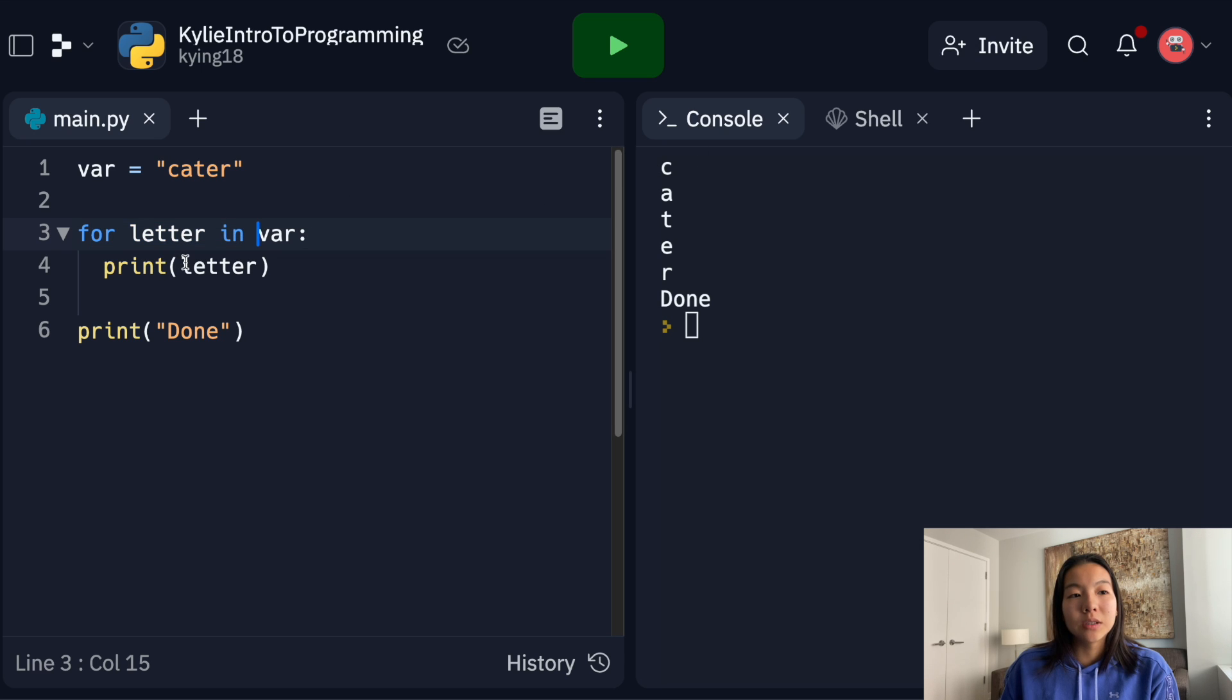So basically, what we're doing is going through C, printing that letter, going to A, printing that letter, T, printing the letter E, R, et cetera, until we don't have any more letters to go through. And then at the very end, we print done.